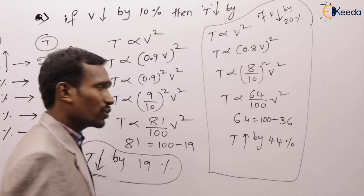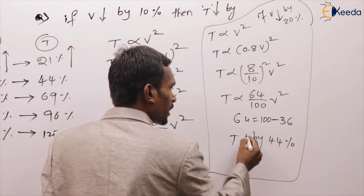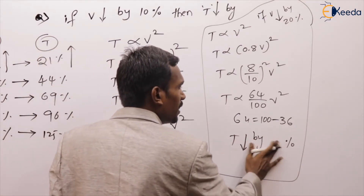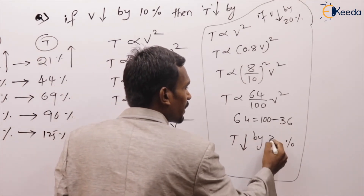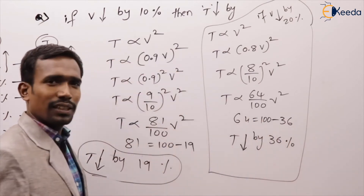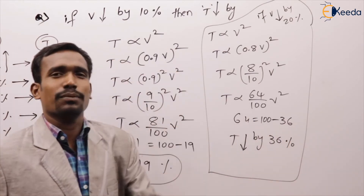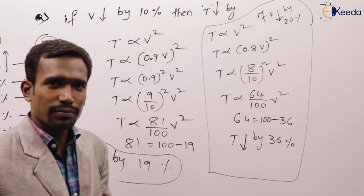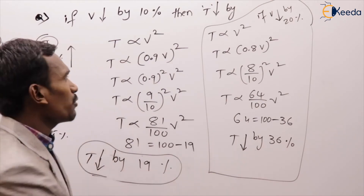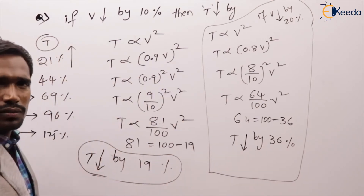So if voltage reduced by 20%, torque reduced by 36%. Like that you have to do for all those values.